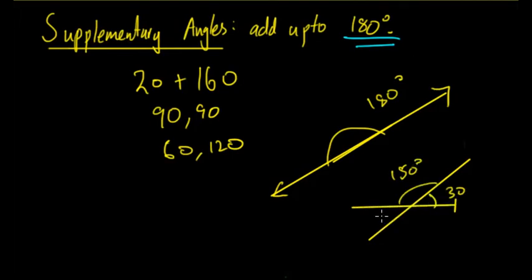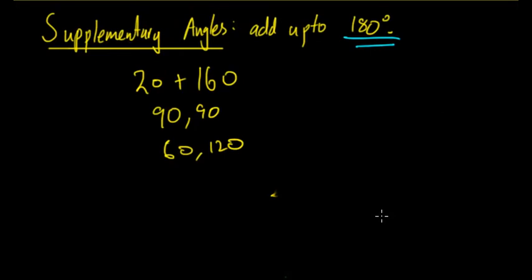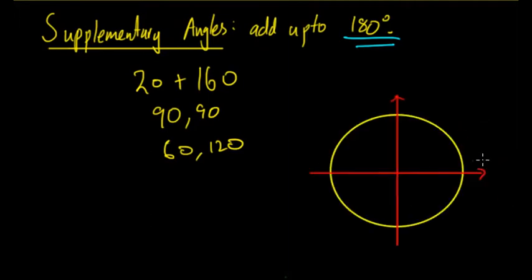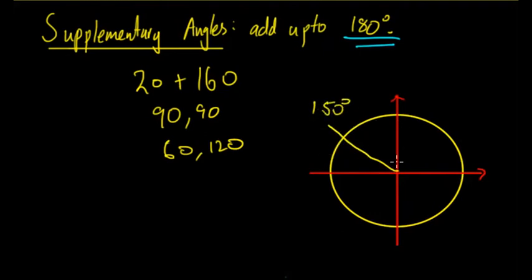With regards to the unit circle, you can see that there are supplementary angles. If we draw in the unit circle, when we look at an angle such as 120 or 150 degrees — for example, 150 degrees — we can see that the supplementary angle is 30 degrees, and we know that these two angles are interrelated.